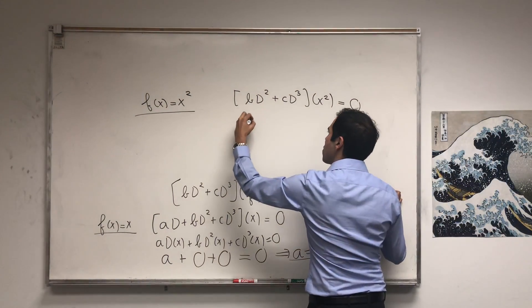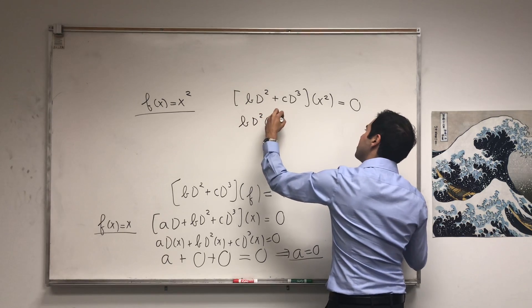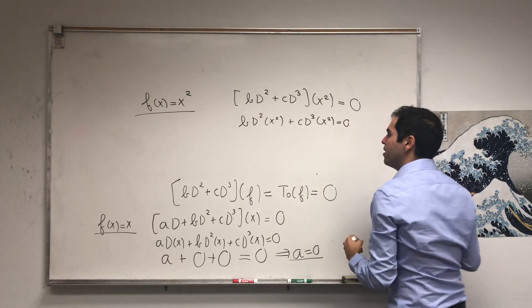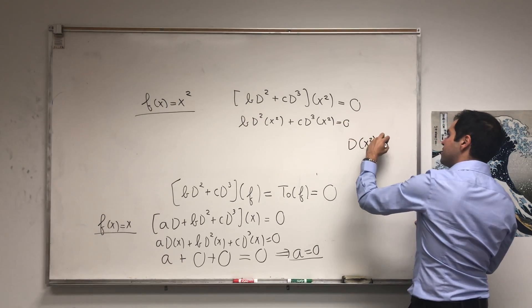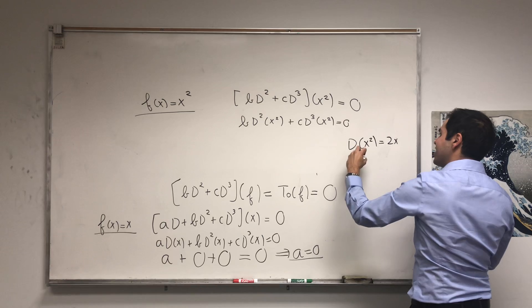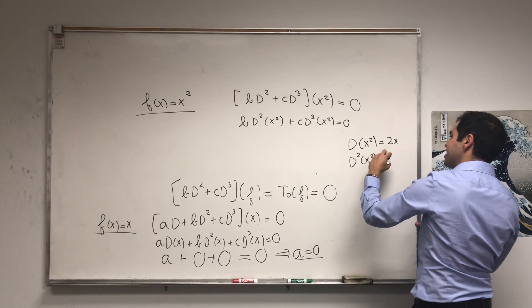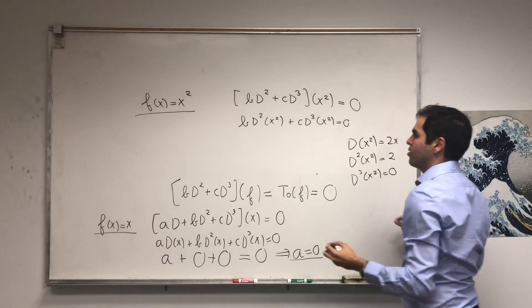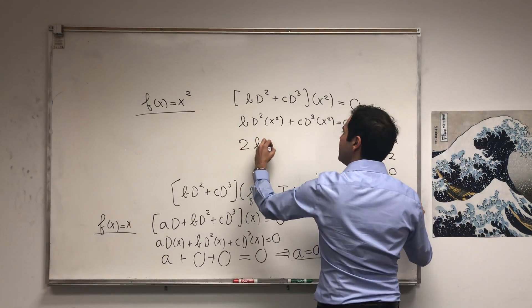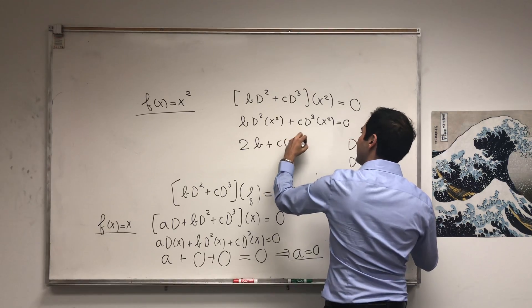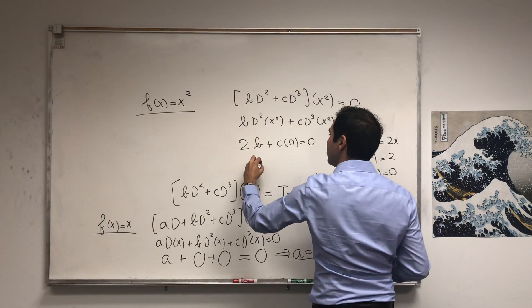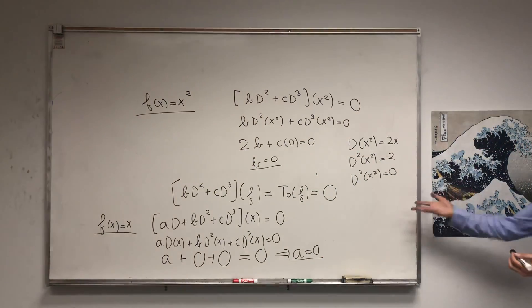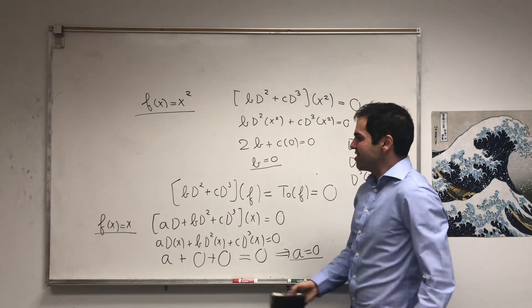So bD²(x²) + cD³(x²) equals zero. But look, D(x²), that's 2x. D²(x²), you differentiate that, you get 2. D³(x²), you get zero. So what you're left with is 2b plus c times zero, that's zero. So 2b is zero, so b is zero.